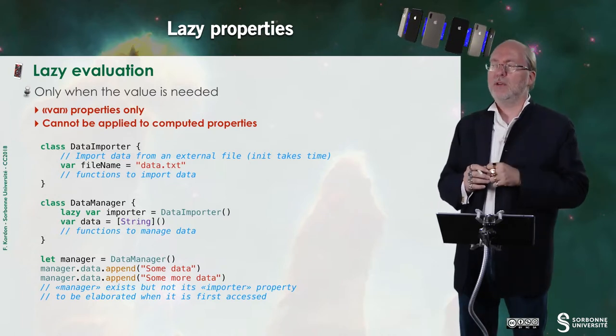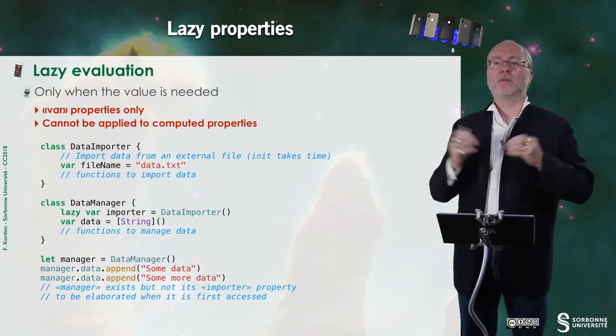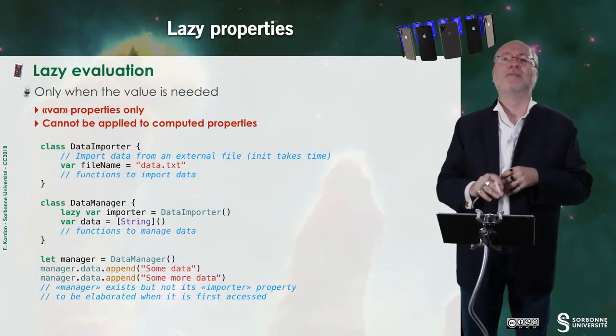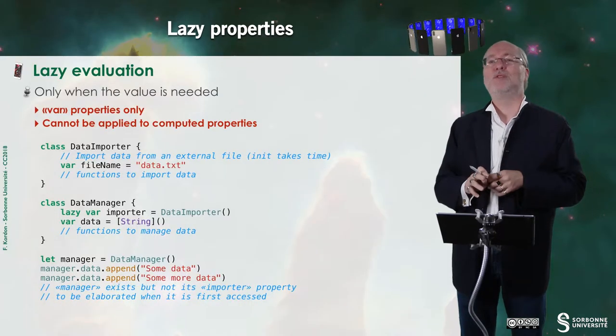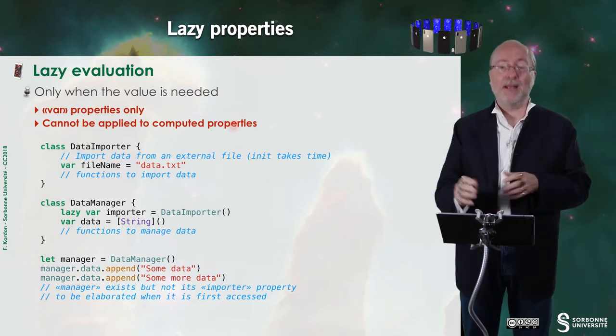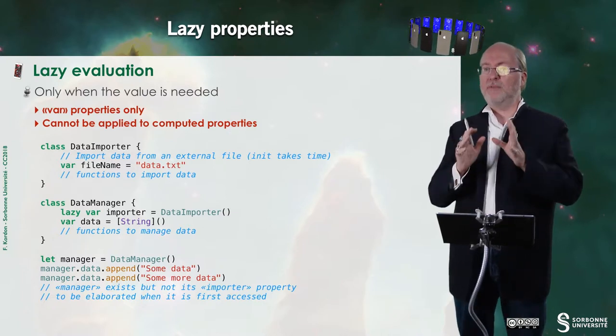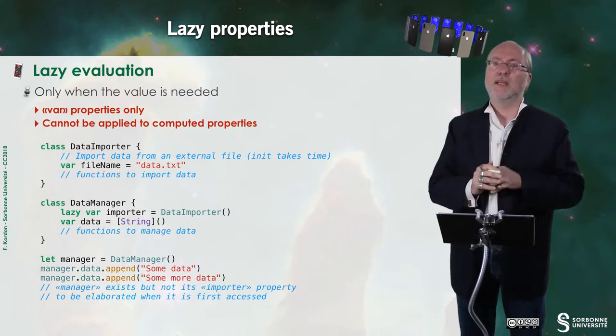It's important because sometimes you have things that are quite long to compute and you want to continue the execution of your program without waiting for this computation. And, in fact, it works for mutable variables only, and it cannot be also applied to computed properties. So let's have a look at this example.